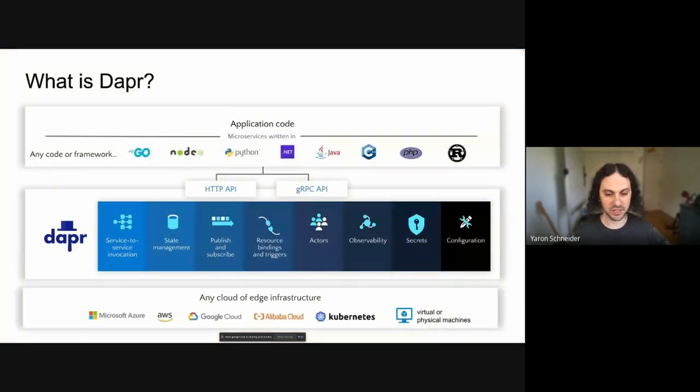But before we deep dive into that, let's talk about what's Dapper. Dapper is essentially a set of APIs for application developers to help them write their applications faster and more reliably. So instead of focusing on things like state management and PubSub and vendors and architectures and triggering their code based on events coming in from different systems and fetching secrets or configuration, Dapper gives them these building blocks to just consume these APIs so they're free to focus on their code, on their company's IP, and their business logic.